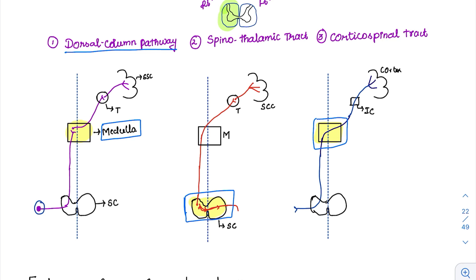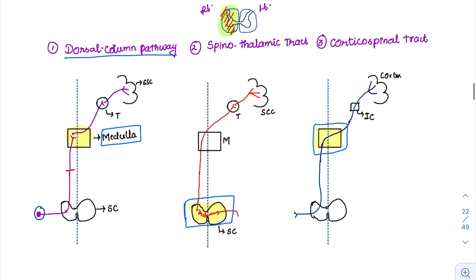Now what are we going to do? We are going to put a lesion. As seen in the diagram here, here we are trying to put a lesion on the right side. So let us see what will happen to these three tracts.